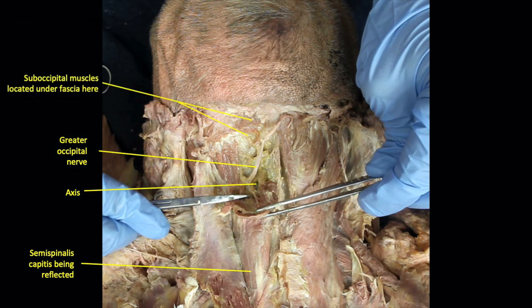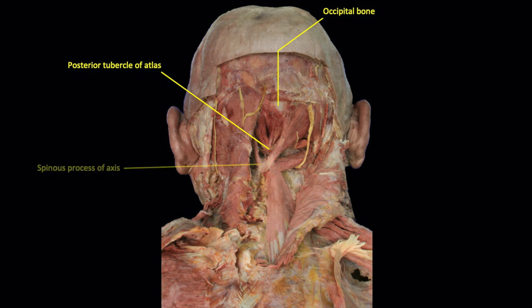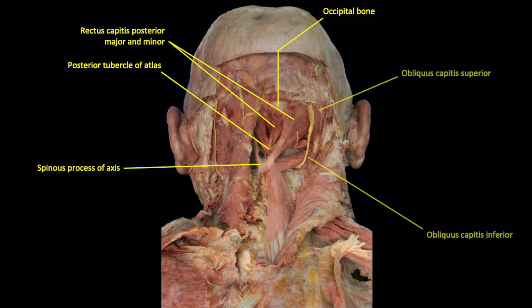Some of the suboccipital muscles are seen here, but they are better seen after a thorough cleaning of the area, as revealed in the next image. The suboccipital area has now been dissected. Let's get oriented before we identify the muscles. Focus your attention on the occipital bone of the skull, the posterior tubercle of the atlas, and the spinous process of the axis. We can now identify the four suboccipital muscles: the rectus capitis posterior major and minor, and the obliquus capitis superior and inferior. They are clearly well suited to provide balancing torques to the atlas and skull.